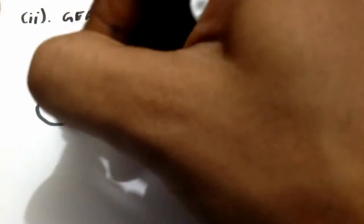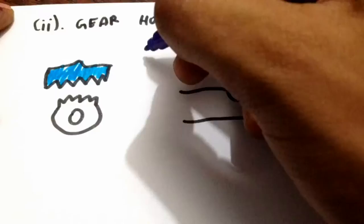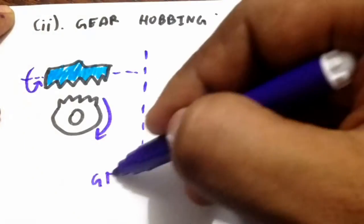Second comes Hobbing Process. The cutter used in this process is called Hob, which is a worm-like structure that carries a profile parallel to its axis. The hob is rotated at a suitable speed and fed into the gear blank.